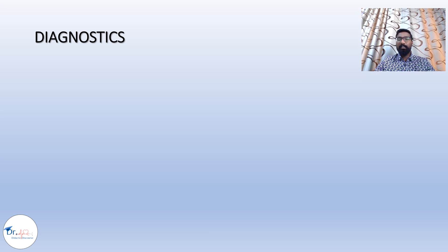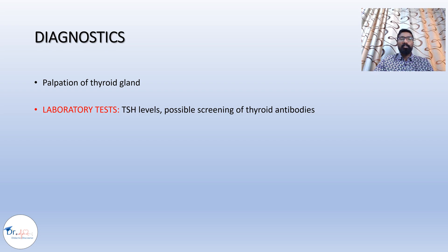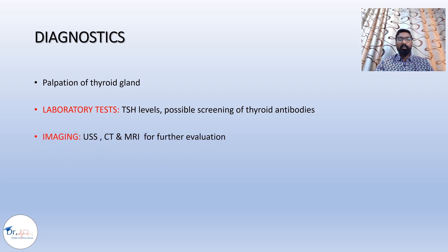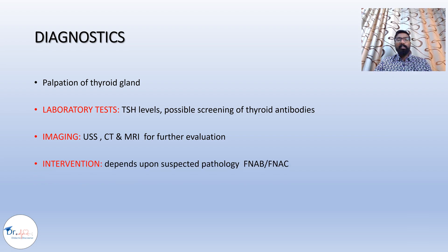Diagnosis of goiter begins with clinical examination by palpation of the thyroid gland. Laboratory tests are run to evaluate TSH levels to determine if the patient is hypothyroid or hyperthyroid. Thyroid antibody screening helps evaluate the underlying cause. Ultrasound imaging, CT, and MRI are used for further evaluation, especially if malignancy is suspected. Depending on the suspected pathology, FNAB or FNAC may be performed.